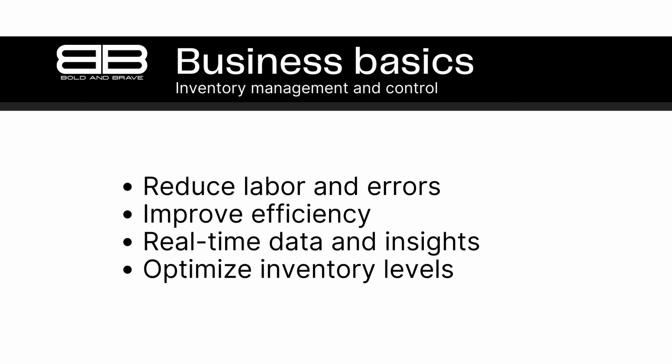In addition to improving efficiency and reducing errors, automation can also provide businesses with real-time data and insights into their inventory levels. This information can help businesses to make more informed decisions about their inventory management and control processes, enabling them to optimize their inventory levels and minimize the risk of stockouts or overstocking. By streamlining operations, reducing errors, and improving efficiency, automation can help businesses to optimize their inventory management processes and improve their bottom line.